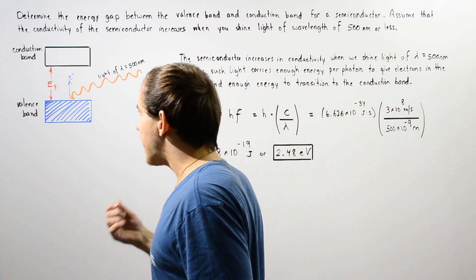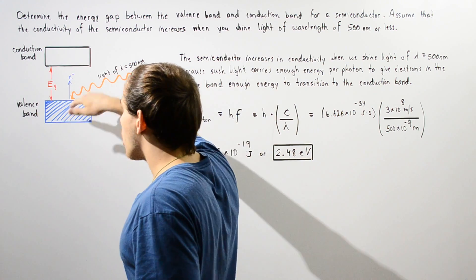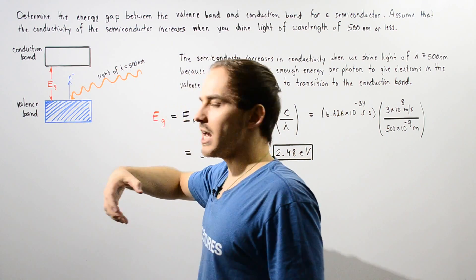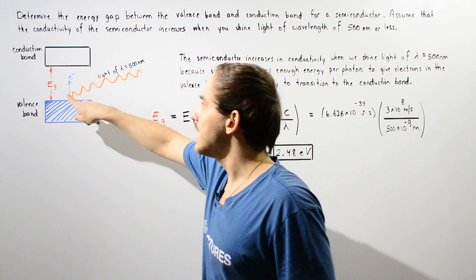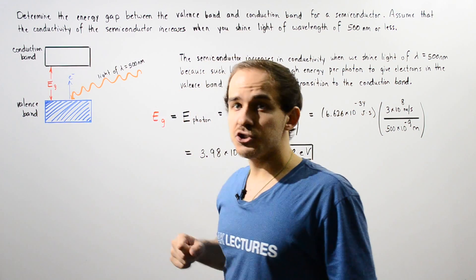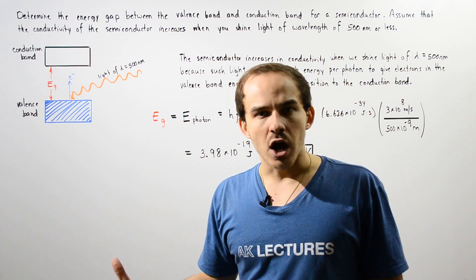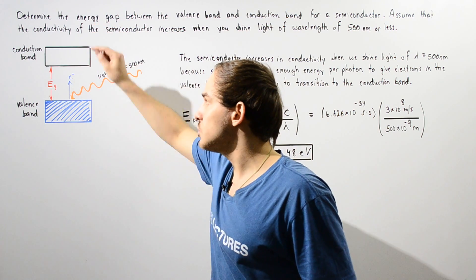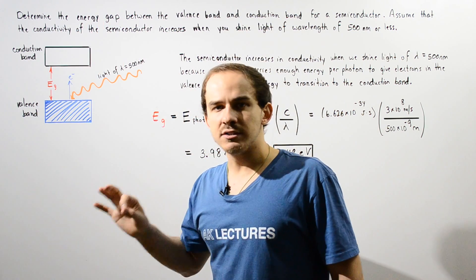So if an electron at the top part of the valence band gains enough energy given by this quantity, the energy gap, then that electron can transition or jump to our conduction band.